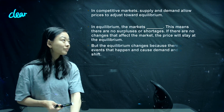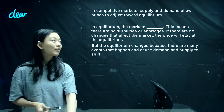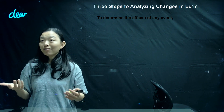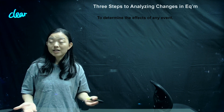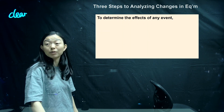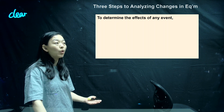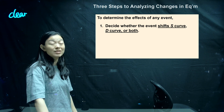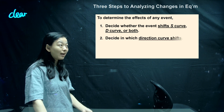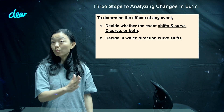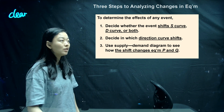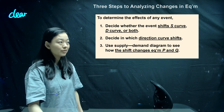Now let's move on to the last part: how to analyze the change in market equilibrium. There are events that might happen in our society and markets that will definitely change the market equilibrium. There are several steps. First, determine whether the event will shift the supply curve or demand curve. Then decide which direction — either shift outwards or shift inwards. Finally, use the demand and supply model to find out the new market equilibrium.